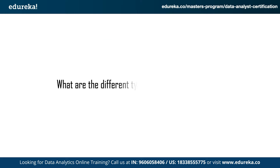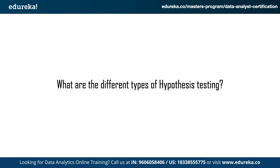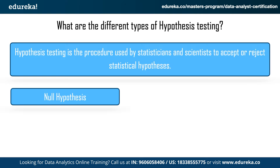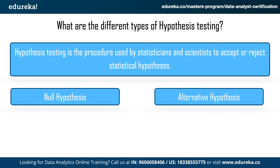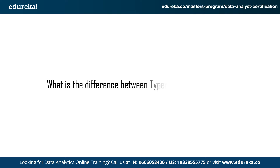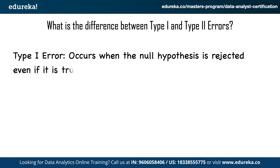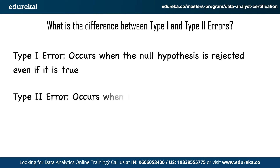The next question is: what are the different types of hypothesis testing? A hypothesis is basically an educated guess about a specific parameter or population, and hypothesis testing is the procedure used by statisticians and scientists to accept or reject a statistical hypothesis. In hypothesis testing you have two kinds: a null hypothesis and an alternative hypothesis. A related question is the difference between type 1 and type 2 errors. A type 1 error occurs when the null hypothesis is rejected even if it is true, whereas a type 2 error occurs when the null hypothesis is not rejected even if it is false.